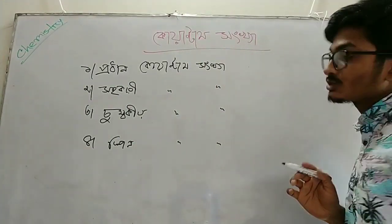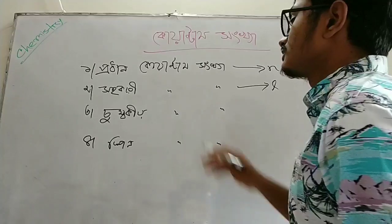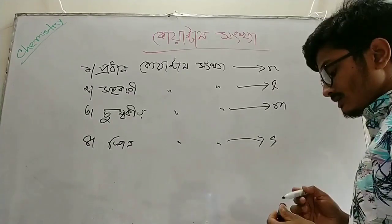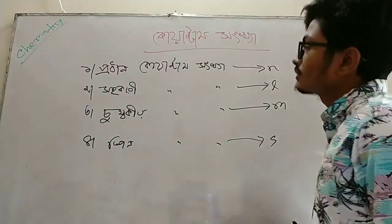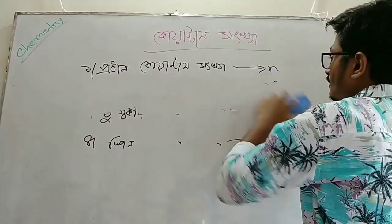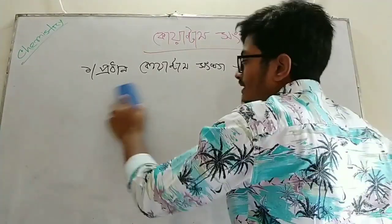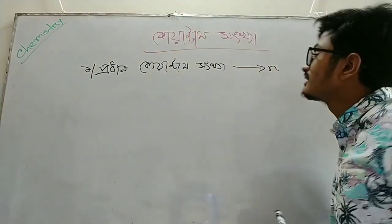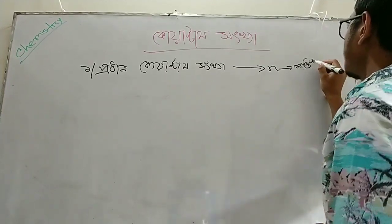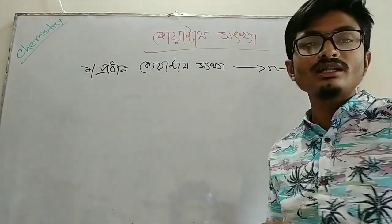The text says H, called the index index. For example, a number of electron transitions is called 1 plus 1 plus 1 plus 1 plus 1 plus 1 plus 1 plus 1 plus 1 plus 1 plus 1 plus 1 plus 1 plus 1.